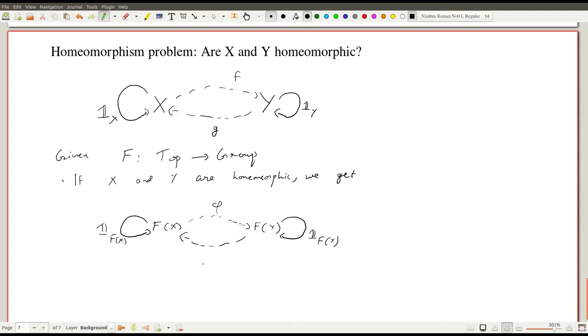And if I have a homeomorphism, I have v and I have c. And if I take this as F of f and c as F of g, what we conclude is that these groups F of X is isomorphic to F of Y.